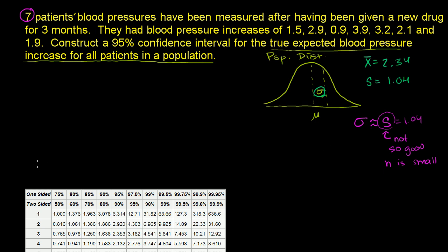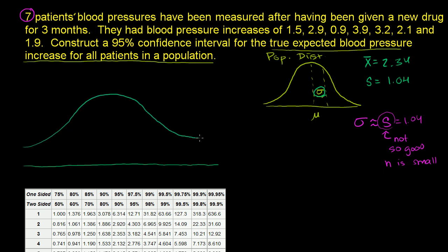The t-distribution is almost engineered to give a better estimate of your confidence intervals when you have a small sample size. It looks very similar to a normal distribution — it has some mean, which is still the mean of your sampling distribution — but it also has fatter tails.